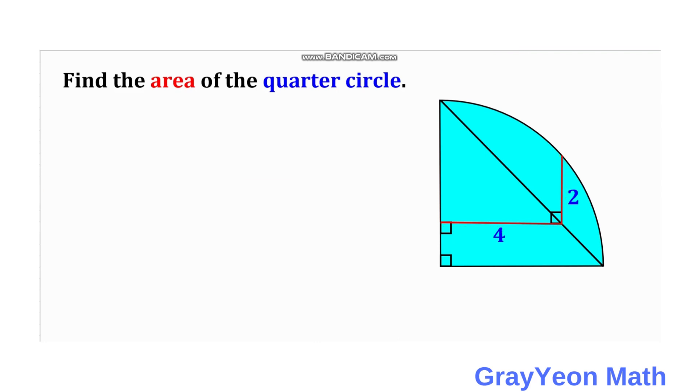Since we are interested in finding the area of the quarter circle, it is best that we get the radius first. So we draw a line from this point of intersection of the red segment to the center of this quarter circle.